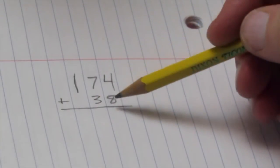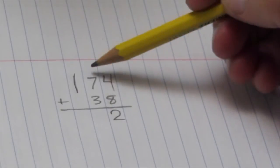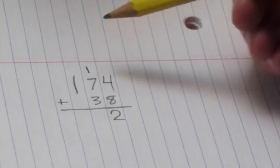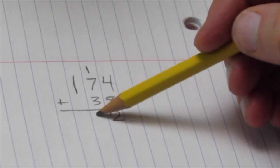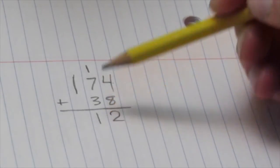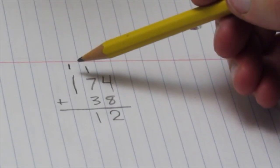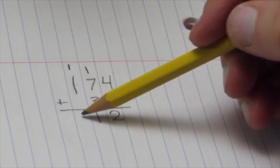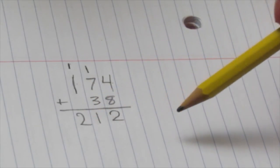On paper, that looks like this. 4 plus 8 is 12. So there's 2 going in the ones bucket, carry 1 over to the tens bucket. 7 and 3 is 10 plus 1 is 11. So 1 goes in the tens column and 1 gets carried into the hundreds bucket. We have 2 hundreds. So 174 plus 38 is 212.